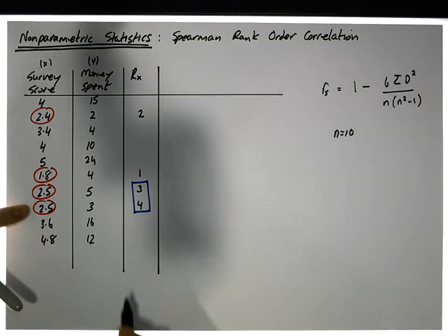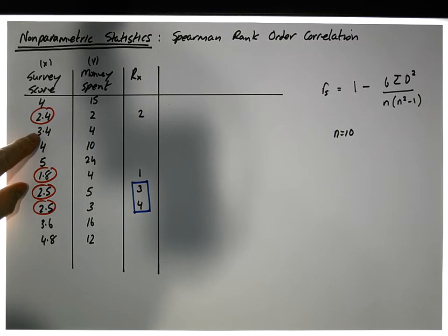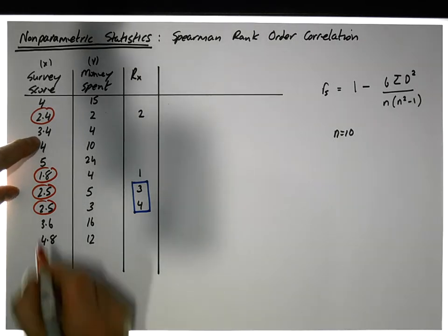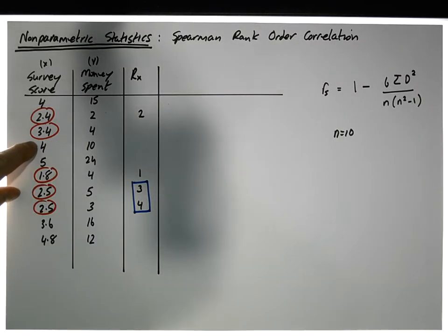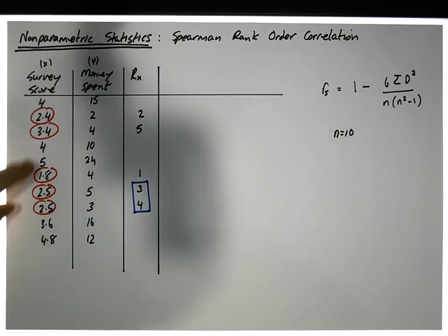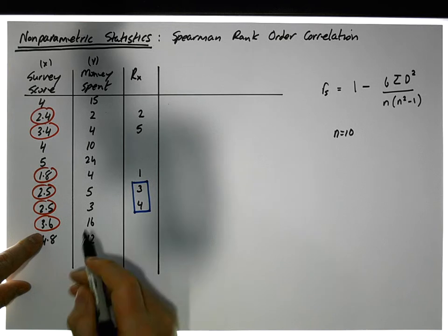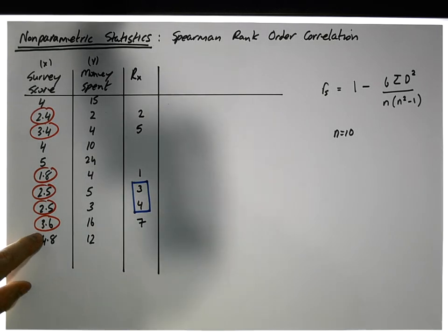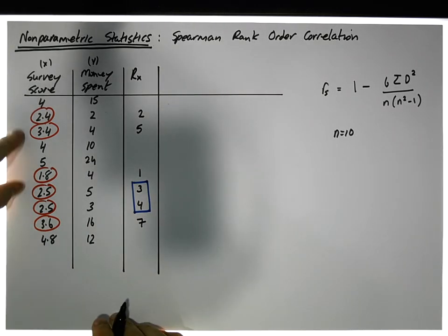Okay, so we've got 2.5 as the next largest. What's next? Well, we have, what's after that? We might have, if I'm not mistaken, 3.4. 3.4 should be a rank of 5. That's the next rank. After 3.4, we have 3.6. Well, 3.6 should be a rank of 7. The next largest value seems to be 4.